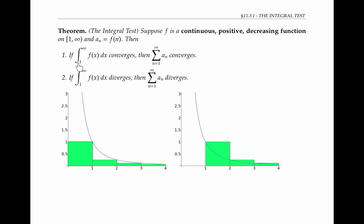then if the integral from one to infinity of f of x dx converges, the series from one to infinity of a sub n converges. And if the integral from one to infinity of f of x dx diverges, then the series diverges. Although I won't give a formal proof of this theorem, the logic behind it is the same logic we used in the previous two examples.